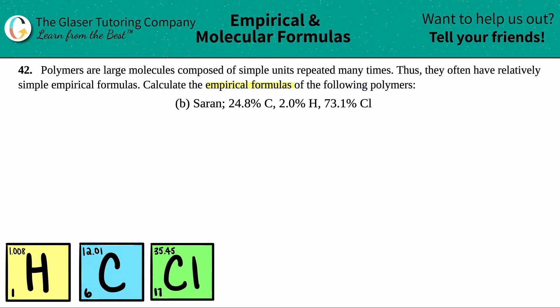So in this case, we have to find the empirical formula for Saran, which is 24.8% carbon, 2.0% hydrogen, and 73.1% chlorine.